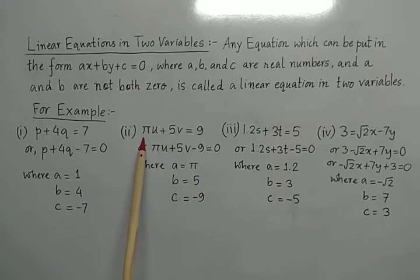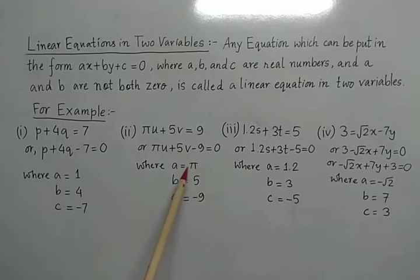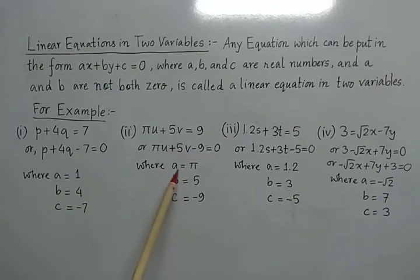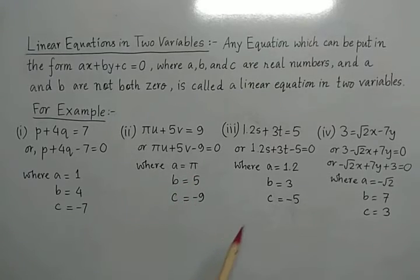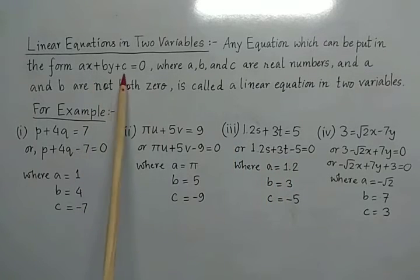Similarly, in the next example: pi u plus 5v equals to 9. It is also not in the form ax plus by plus c equals to 0. We have to transpose this 9 onto the left hand side. Then, after comparing with the general form, we get a equals to pi, b equals to 5, and c equals to minus 9.